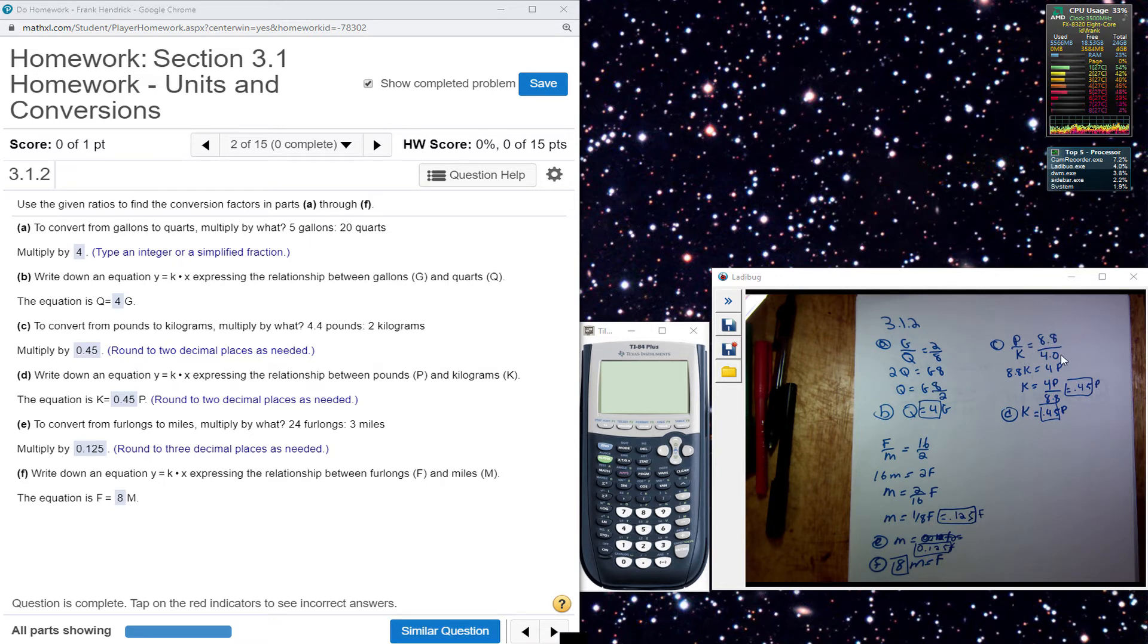Going from left to right, set up a proportion. And I solve for K. So I end up having to multiply by .45.